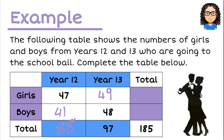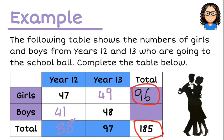Now I just need to find the total number of girls and the total number of boys. So 47 plus 49 gives me the total number of girls from both Year 12 and 13, which is 96. Then to find the boys, I could do 41 plus 48, or I could do 185 minus 96 — either way that works out to be 89 students. So there were 89 boys that went to the ball. That completes the first step of filling in the table.